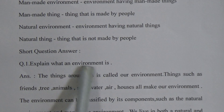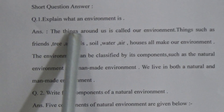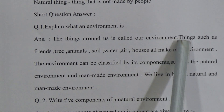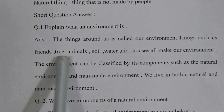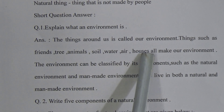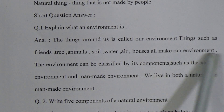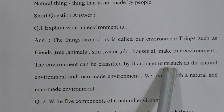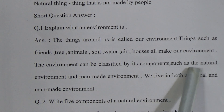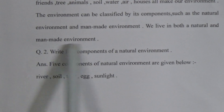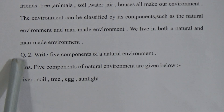First short question: explain what an environment is. Answer: the things around us are called our environment. Things such as friends, trees, animals, soil, water, air, and houses all make our environment. The environment can be classified by its components such as the natural environment and man-made environment. We live in both a natural and a man-made environment.